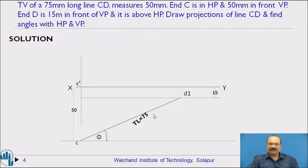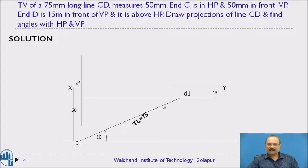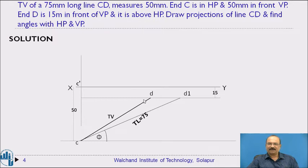We have now located the 75 mm true length line. Next, the top view of the line CD measures 50 mm — this is the apparent length. Keeping the compass at point C, measure 50 mm and cut the locus line to get point D. The CD length of 50 mm is the top view length (TVL), and the earlier 75 mm cut gives the true length. Both are now established in the top view.